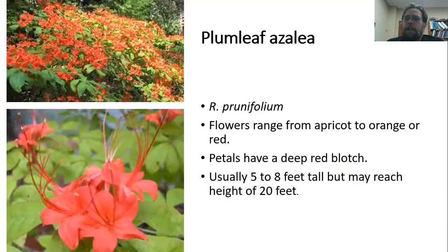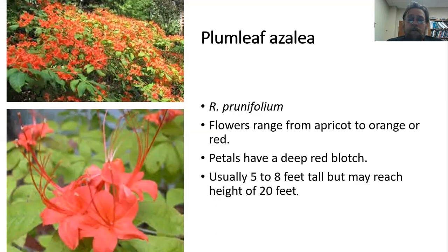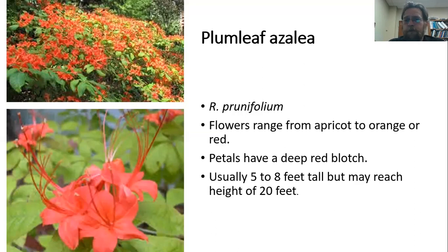This is the plum-leaf azalea, R. prunifolium. Flowers have an apricot or orange color, and often the petals have a deep red blotch. While usually around five to eight feet tall, they can reach up to 20 feet, so they can take up a lot of space and put on a lot of show.